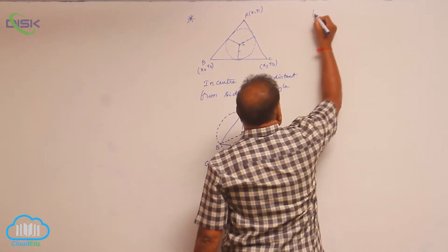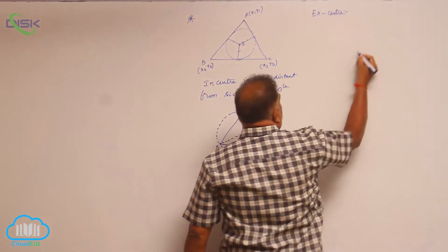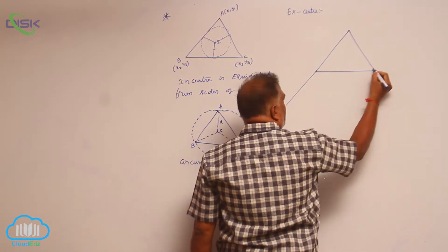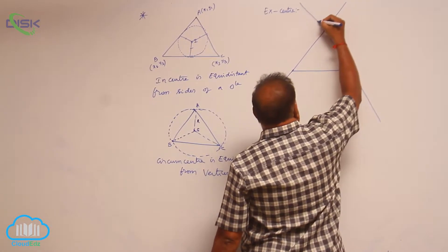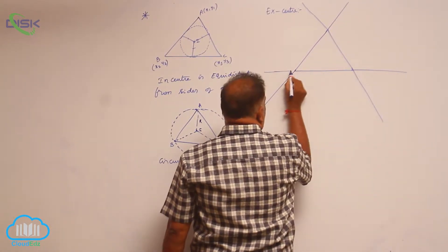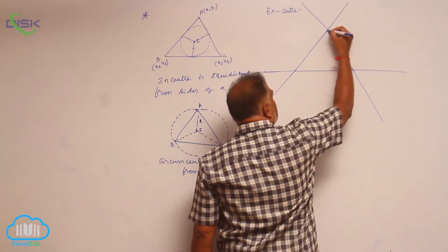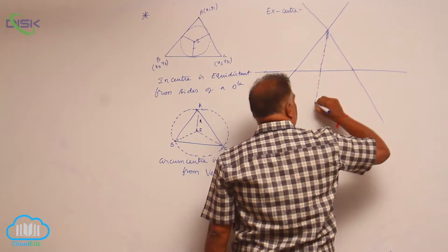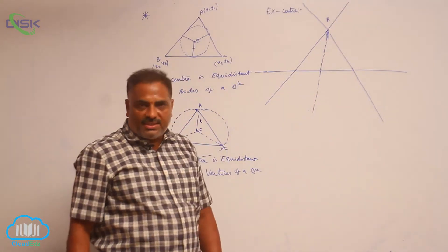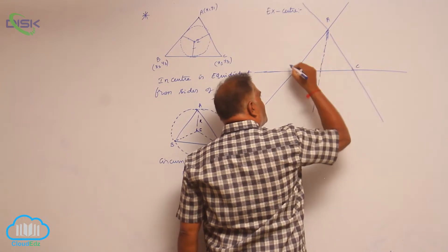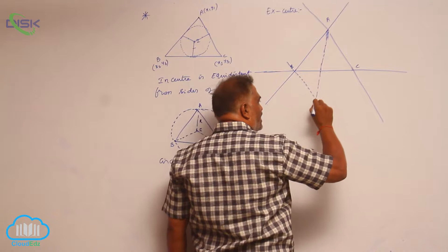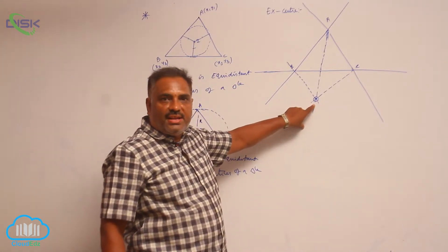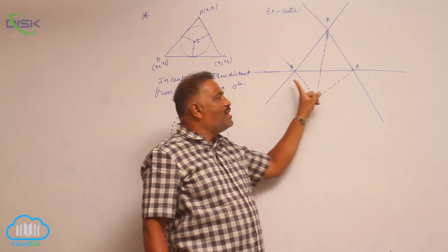Now let us come to a new concept called the excenter. Consider a triangle. Now extend the lines. One incircle is possible. First of all, this is called the internal angular bisector — this and this are also internal angular bisectors. Now for vertex A we draw the internal angular bisector, and for B and C we draw the external angular bisectors. This particular point is called the point of concurrence of one internal angular bisector and two external angular bisectors.